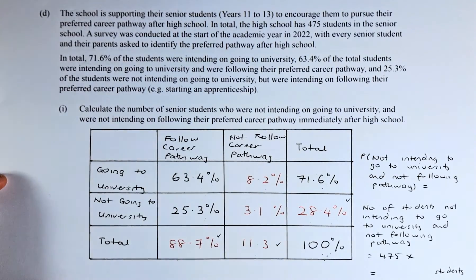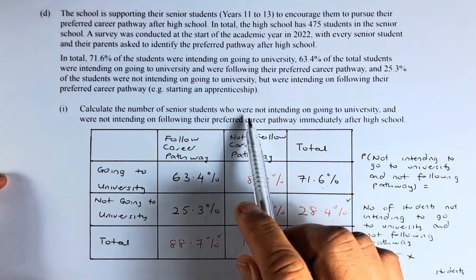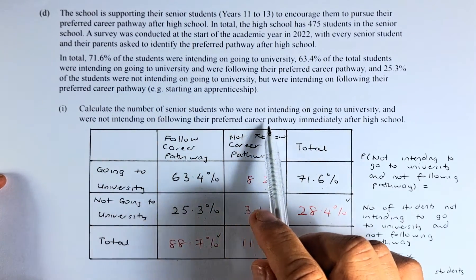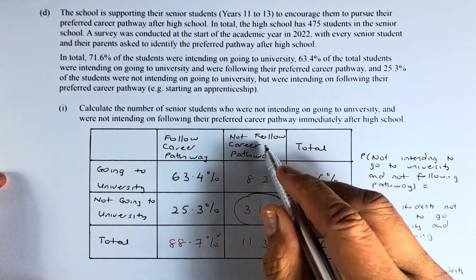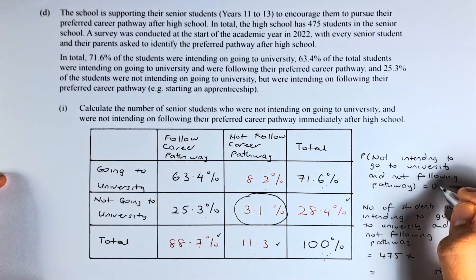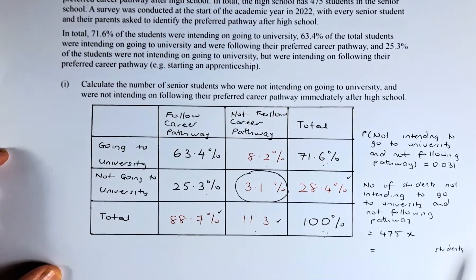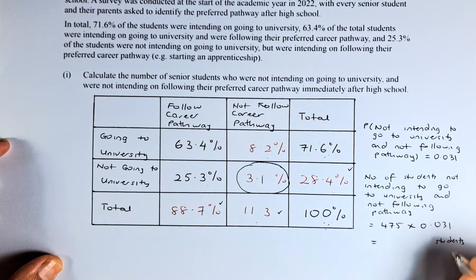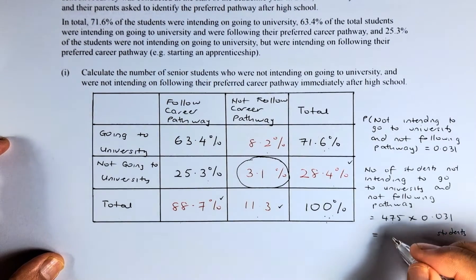Once we have that, we are able to calculate the probability using this table. The question asks us to calculate the number of senior students — there are 475 senior students — who were not intending to go to university and were not intending to follow their career pathway immediately after high school. The probability of not following pathway and not going to university is 3.1% or 0.031. To calculate the number of students, you take 475 multiplied by 0.031, which gives a total of 15 students.